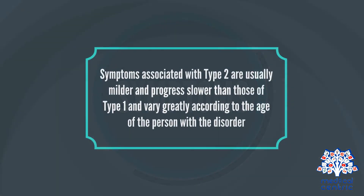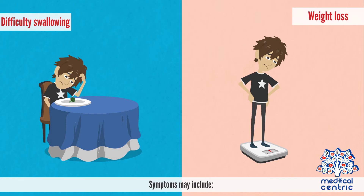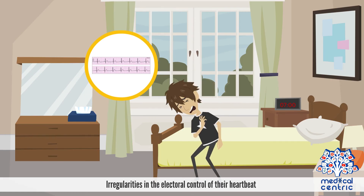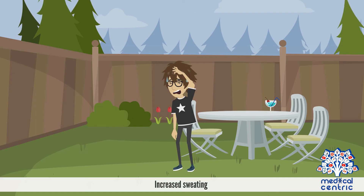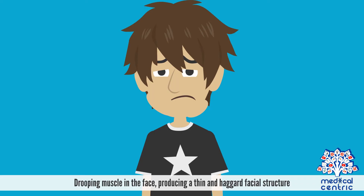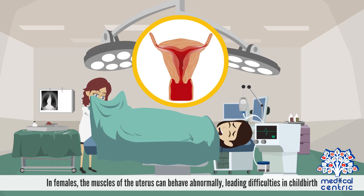Symptoms associated with type 2 are usually milder and progress slower than those of type 1, and vary greatly according to the age of the person with the disorder. Symptoms may include difficulty swallowing, weight loss, irregularities in the electrical control of the heartbeat, cataracts, increased sweating, drooping muscles in the face, and a thin and haggard facial structure. In females, the muscles of the uterus can behave abnormally, leading to difficulties in childbirth.